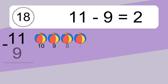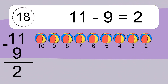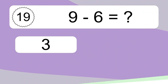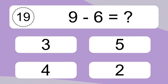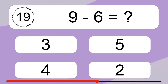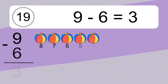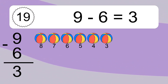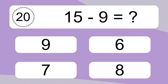Eleven minus nine equals two. Let's count it: ten, nine, eight, seven, six, five, four, three, two. Nine minus six equals what? Nine minus six equals three. Let's count it: eight, seven, six, five, four, three.